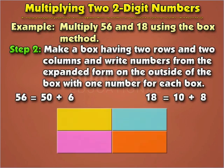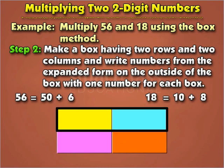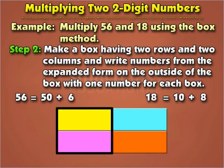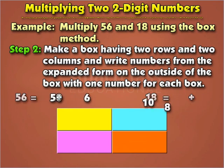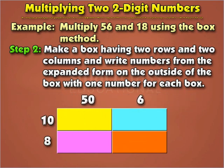Step 2: Make a box having two rows and two columns, and write numbers from the expanded form on the outside of the box, with one number for each section. For the first multiplicand, write numbers from the expanded form on top. For the second multiplicand, write numbers from the expanded form on the left. Here, we write fifty and six on top, and ten and eight on the left.